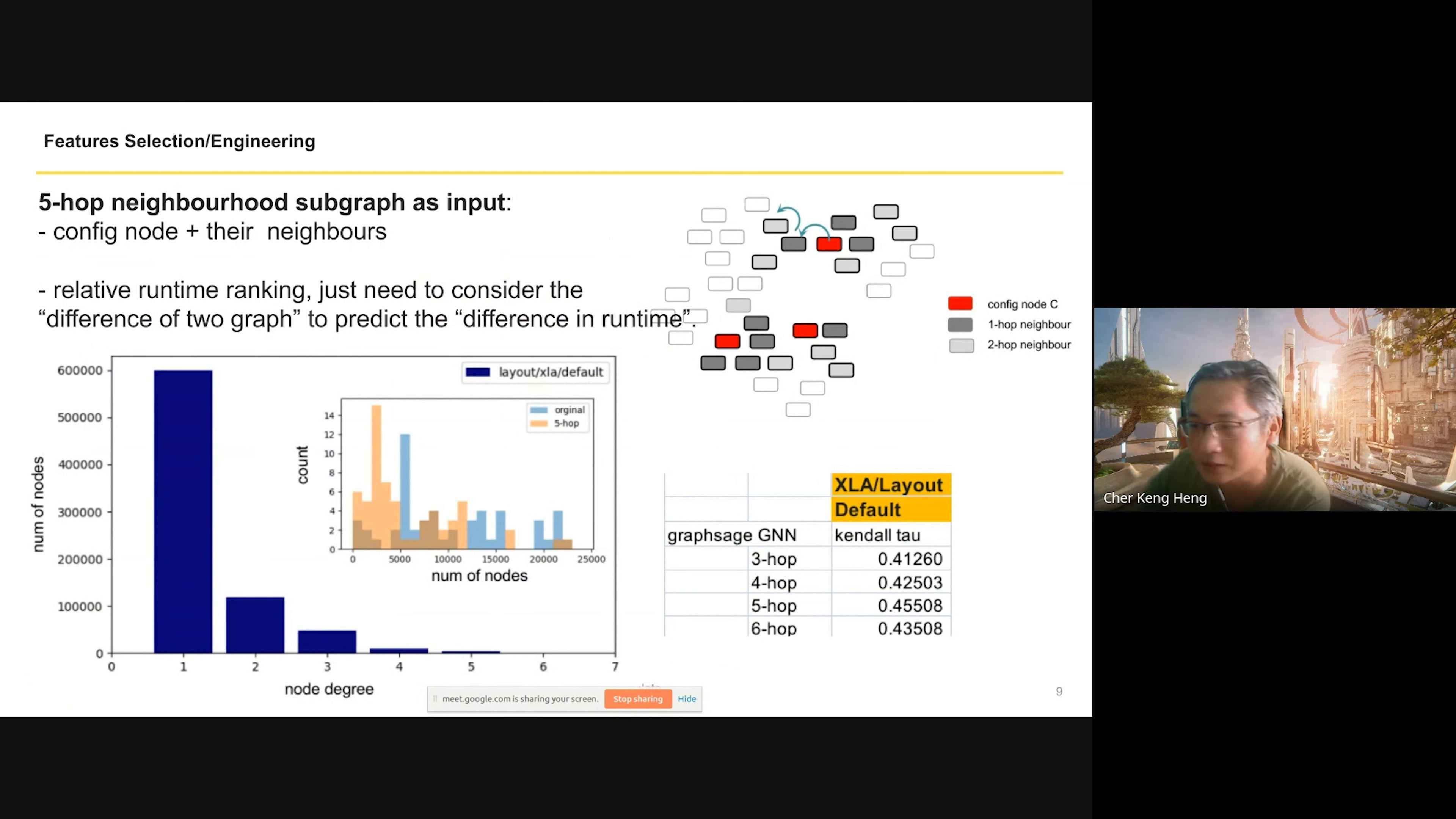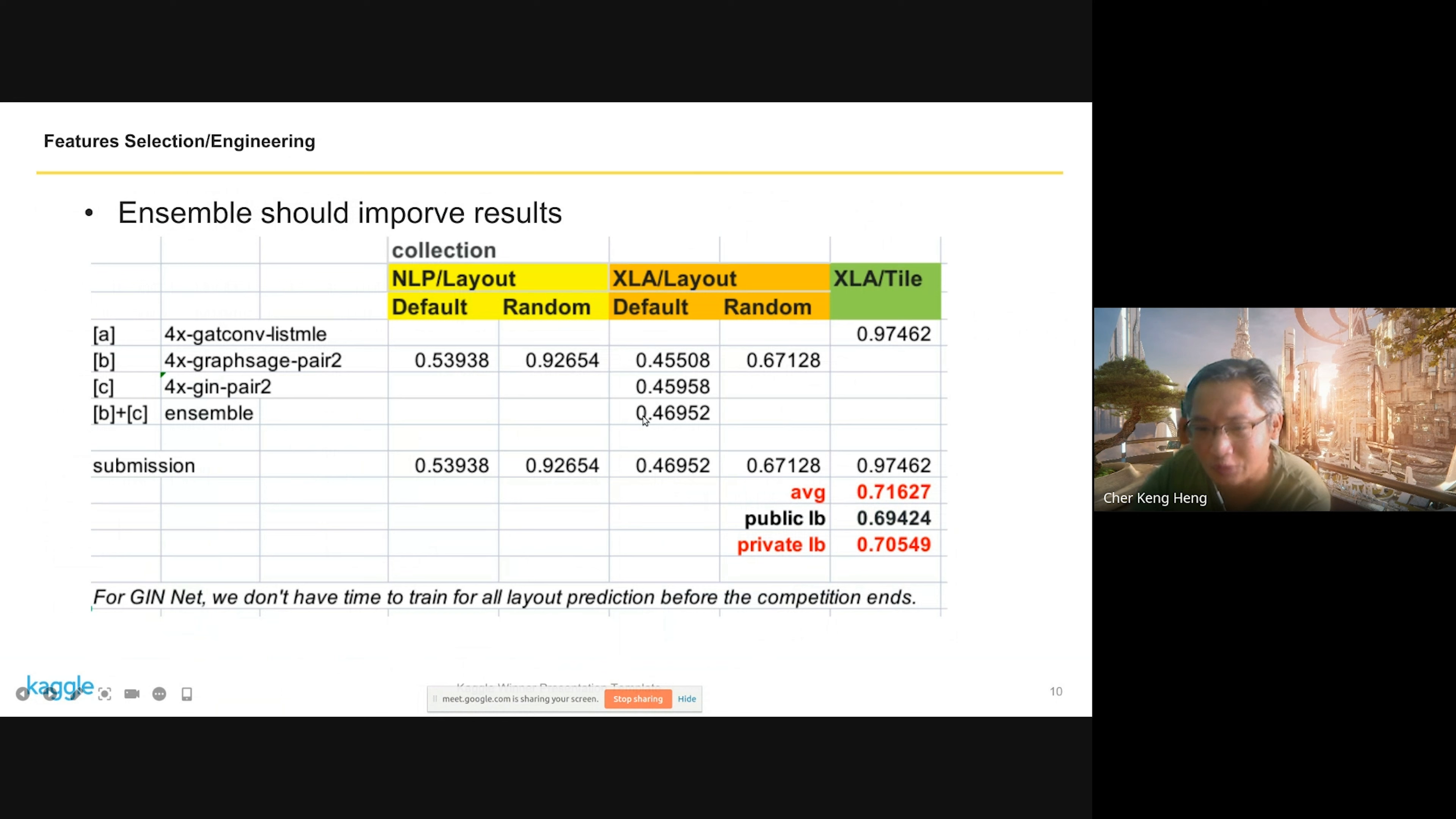These are the results. I did try to use ensemble but I don't have time to improve. I found it's quite difficult to train the GNN because results fluctuate between different hyperparameters like batch size. Nevertheless, for XLA default, ensemble between different architectures does improve results. For the submission, I'm using GraphSAGE for these three and ensemble for the defaults. For tau, it's GAT attention. The results are quite close to what I have for local validation, and private and public are quite close.